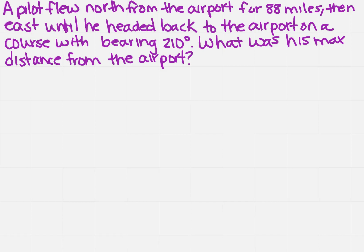A pilot flew north from the airport for 88 miles, then east until he headed back to the airport on a course with bearing 210 degrees. What was his maximum distance from the airport?